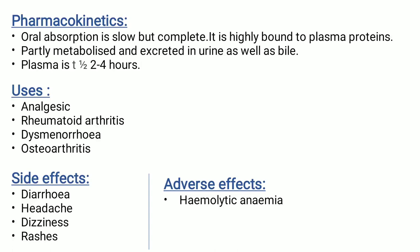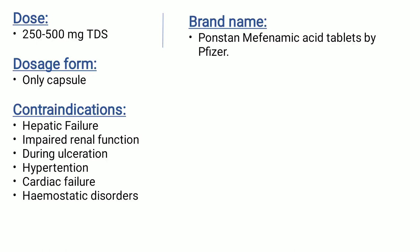Plasma half-life is 2–4 hours. Uses: analgesic, rheumatoid arthritis, dysmenorrhea, osteoarthritis. Side effects: diarrhea, headache, dizziness, and rashes. Adverse effects: hemolytic anemia. Dose: 250–500 mg, 3 times a day. Dosage form: only available in capsule form. Contraindications: hepatic failure, impaired renal function, during ulceration, hypertension, cardiac failure, and hemostatic disorders. Brand name: Ponstan mefenamic acid tablets by Pfizer Company.